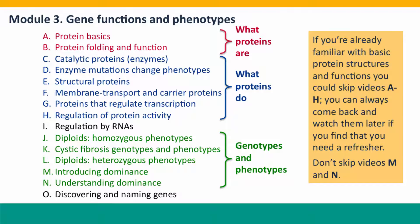If you've got a strong background in biology already — if you've taken basic cell biology or a strong first-year university biology course — you could probably get away with skipping the first half of this module, videos A through H. You can always come back later and watch them. Don't skip lectures J through N, especially lectures M and N. They present dominance in a new way that's fundamentally important for understanding the rest of the course.